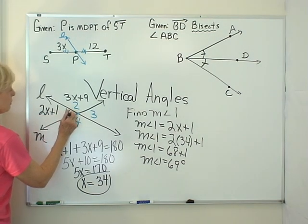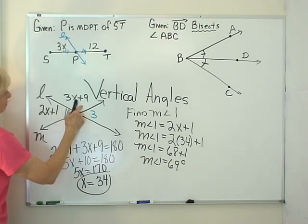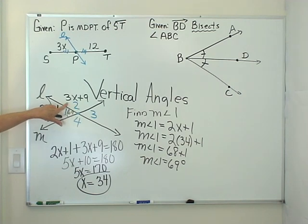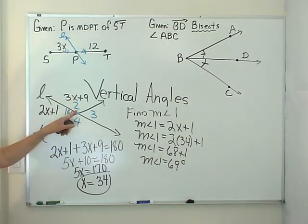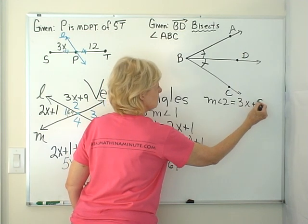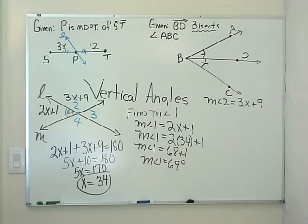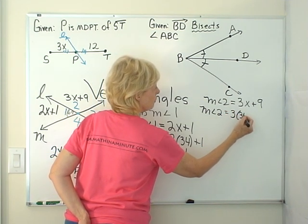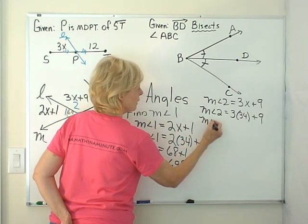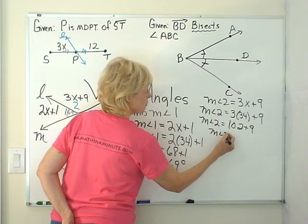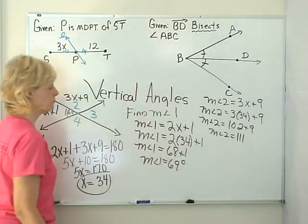So if this angle is 69 degrees, I want you to think of two ways that we could get the measure of angle 2. Well, one thing, we could put in 3x plus 9 and we could substitute in 34 for x. So let's do that. The measure of angle 2 is 3x plus 9. Now x is 34. So let's put in 34 for x and see what we get. We've got 3 times 34 plus 9. 3 times 34 would be 102 plus 9. And then the measure of angle 2 would be 111 degrees.